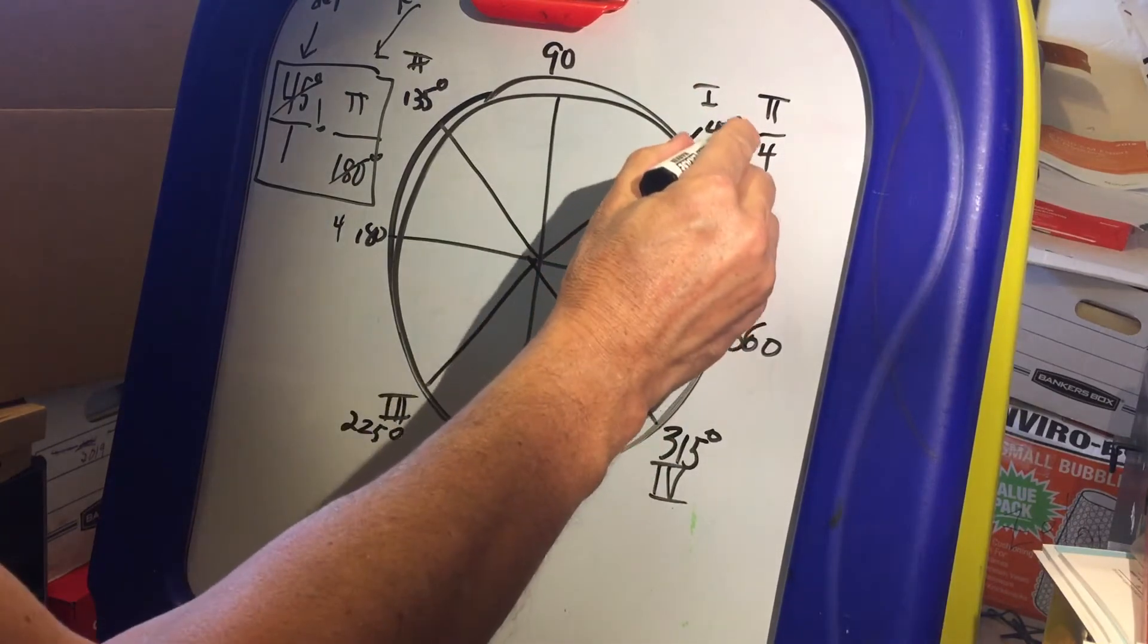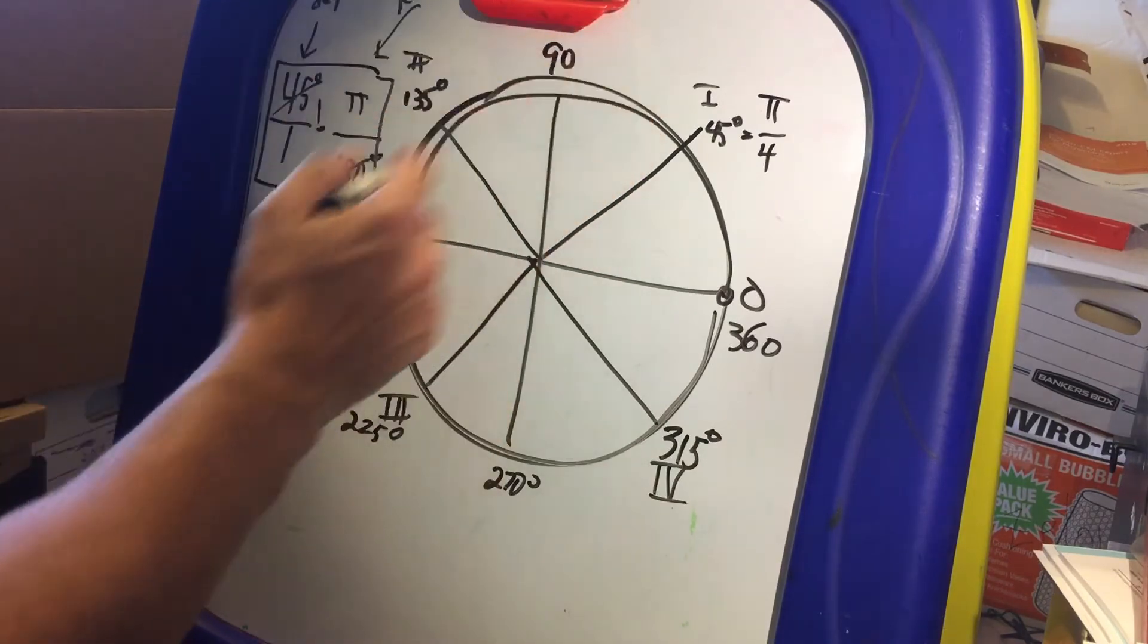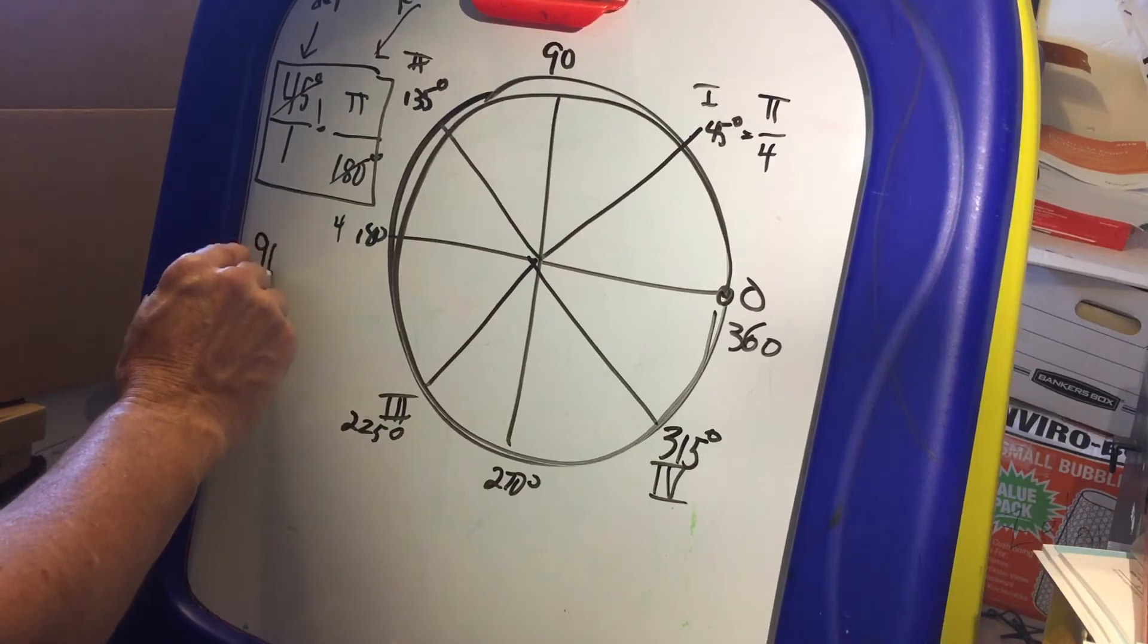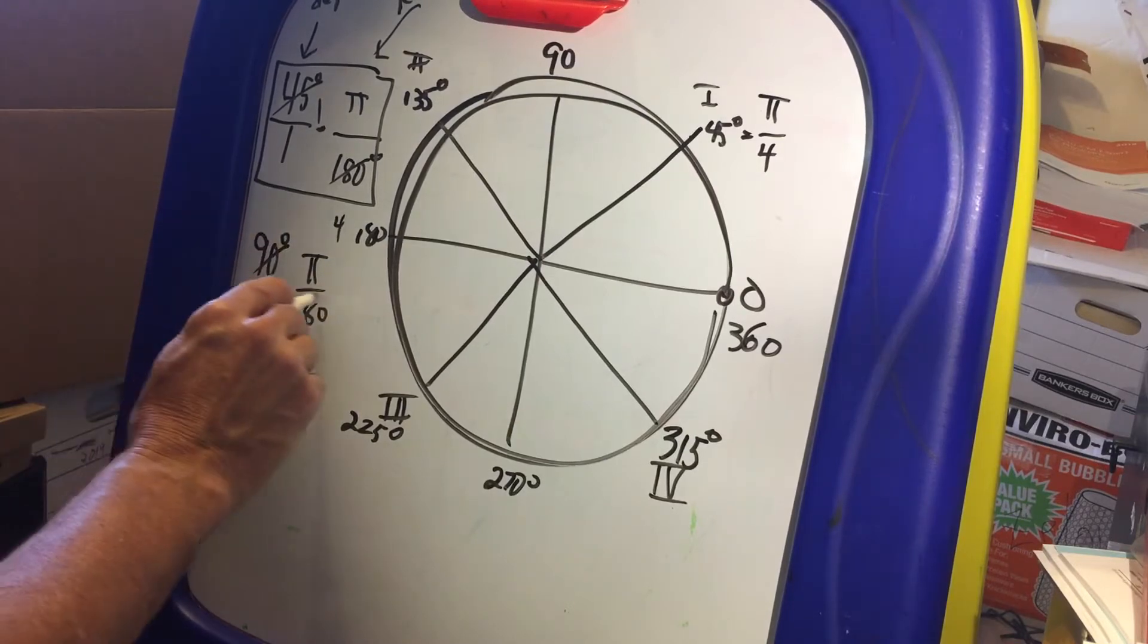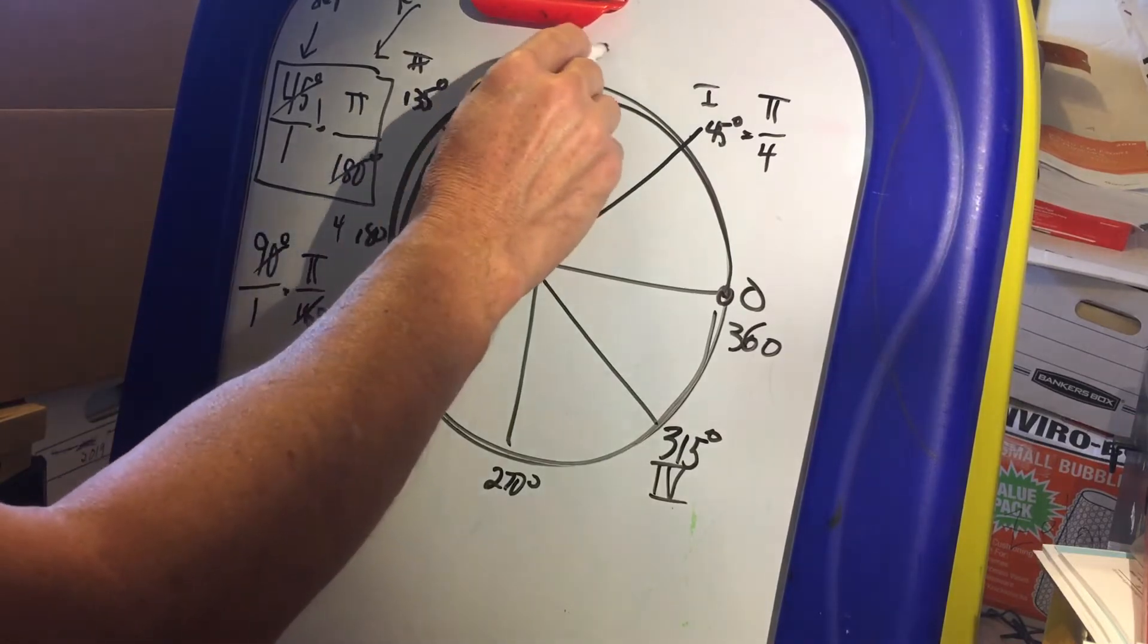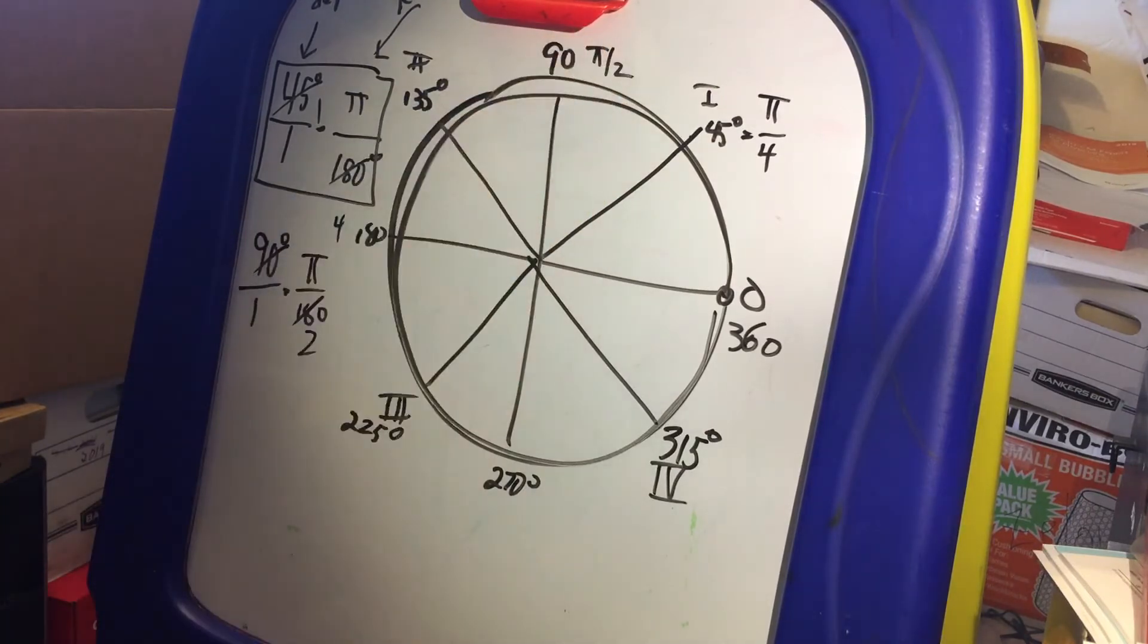These are equivalent. We need to be able to talk about something in degrees or radians at the same time. You could do the same thing with 90 degrees. So 90 degrees over one times pi over 180, we convert this, this reduces to pi over two. And you can keep doing this.